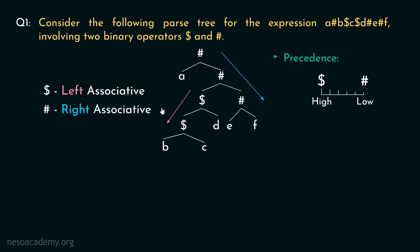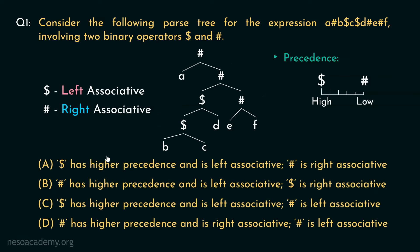Let's now examine the options. See the first option that is A: dollar has higher precedence and is left associative whereas hash is right associative. Well this is the correct choice. So this is how judging the parse tree itself sometimes we can figure out the associativity and the precedence of the operators.